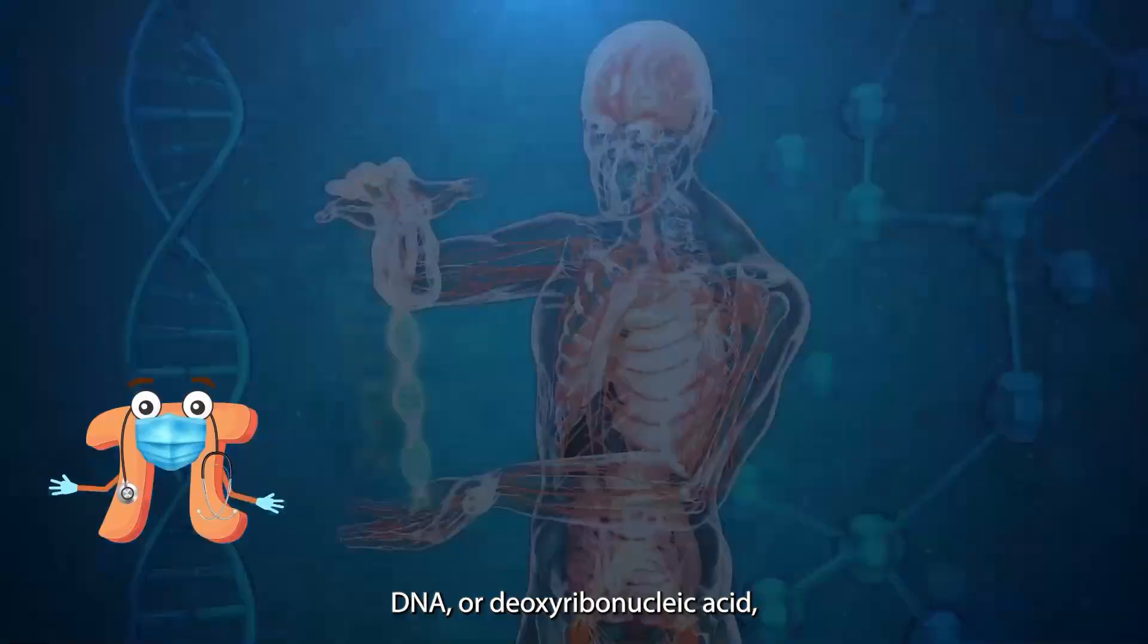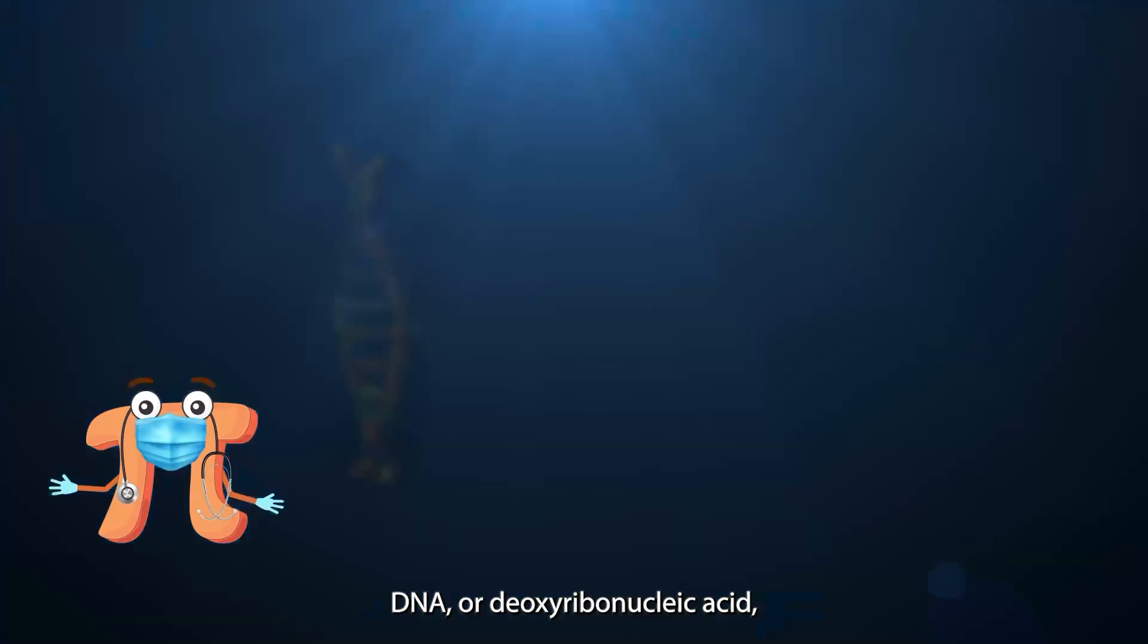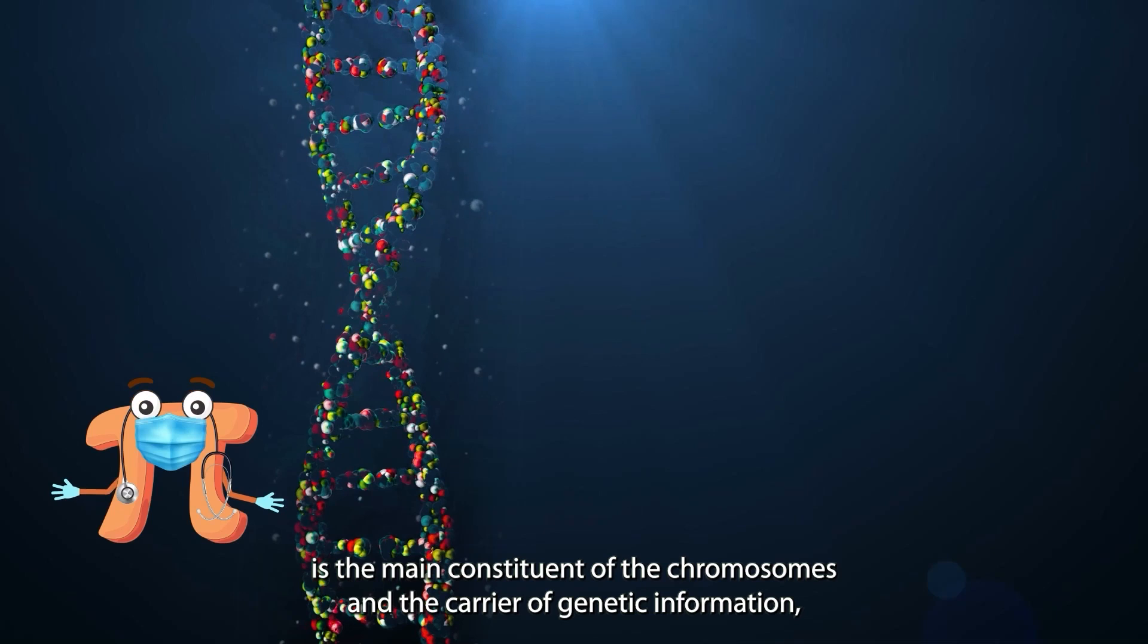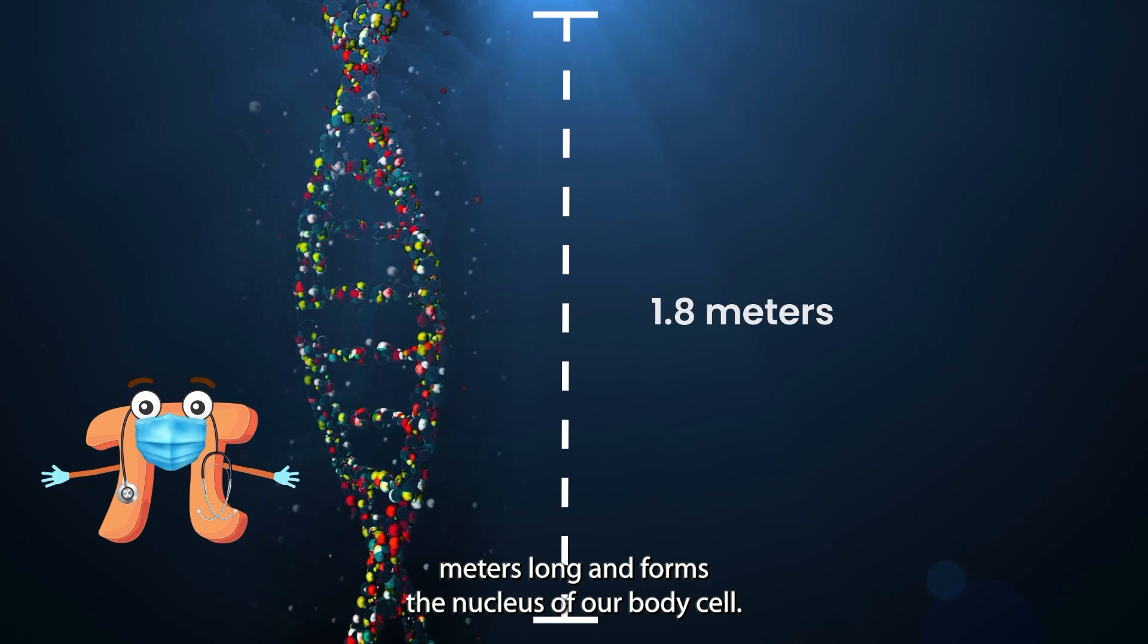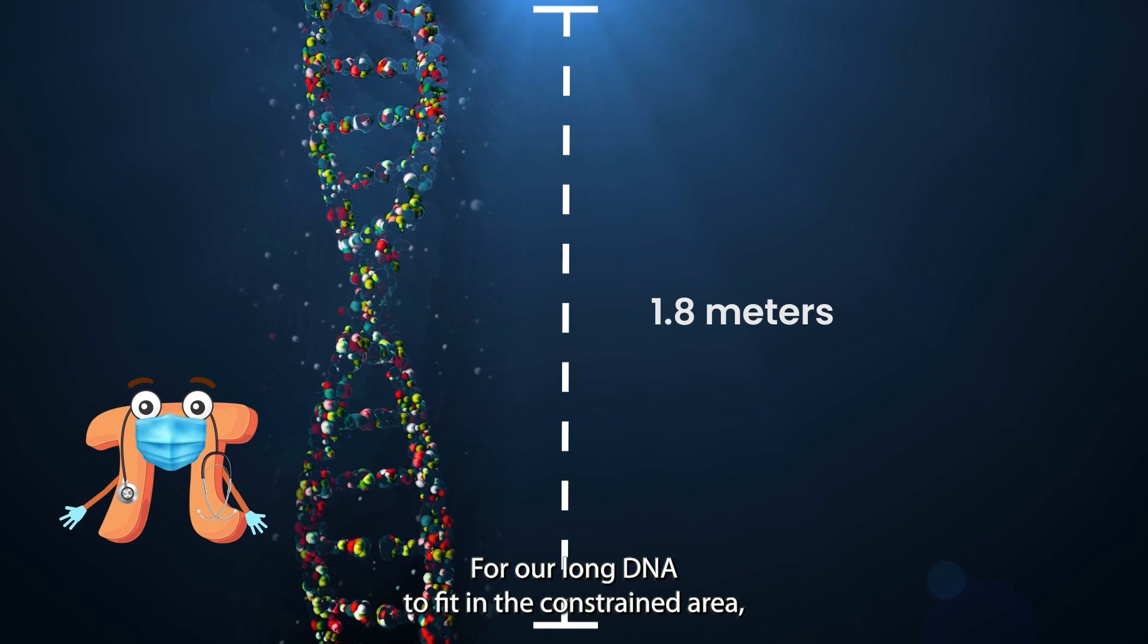DNA or deoxyribonucleic acid is the main constituent of the chromosomes and the carrier of genetic information, which gives biological instructions making each species unique. DNA is typically 1.8 meters long and forms the nucleus of our body cell with only 10 microns of the average diameter. For our long DNA to fit in the constrained area, it wraps itself to form nucleosomes that look like a string of beads.